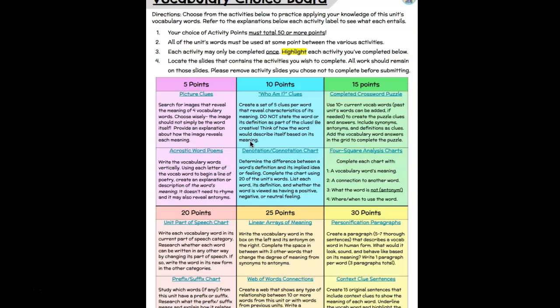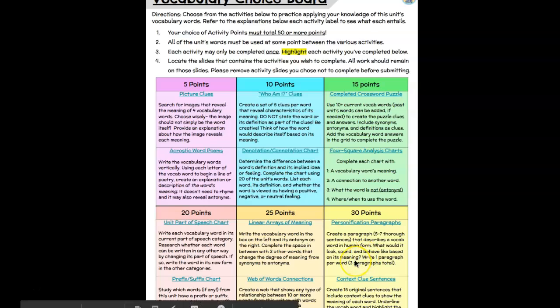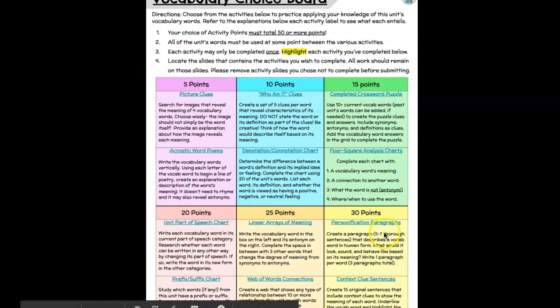Then what you are going to do with those key words is complete a total of activities that totals 50 points. Each week it is up to you how many points you want to earn based on how many assignments you complete. You have to complete 50 points or more. If I wanted to complete just two assignments, I could complete one 30-point and one 20-point, or I could complete two 10-points, and so on and so forth.